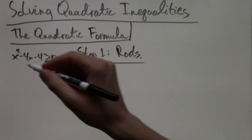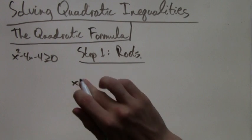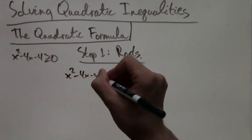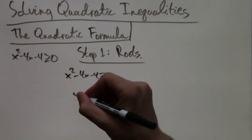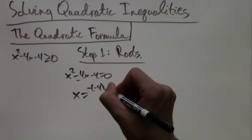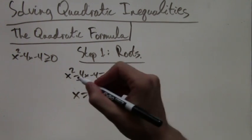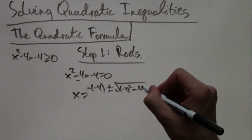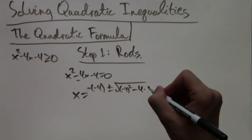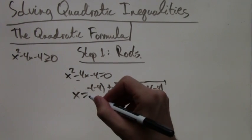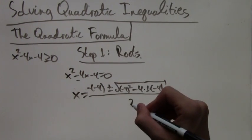So we have x equals, and we apply the quadratic equation. If we have x squared minus 4x minus 4 equals 0, then x equals negative negative 4 plus or minus square root of negative 4 squared minus 4 times 1 times negative 4, all over 2 times 1.